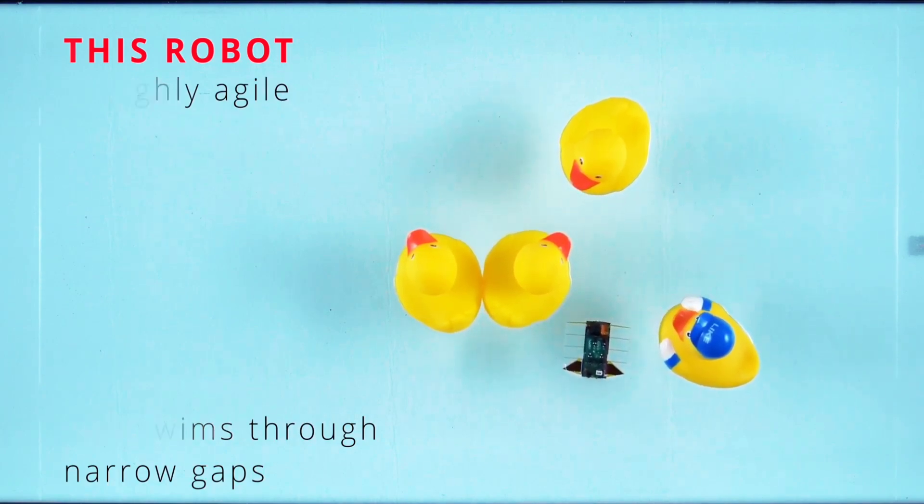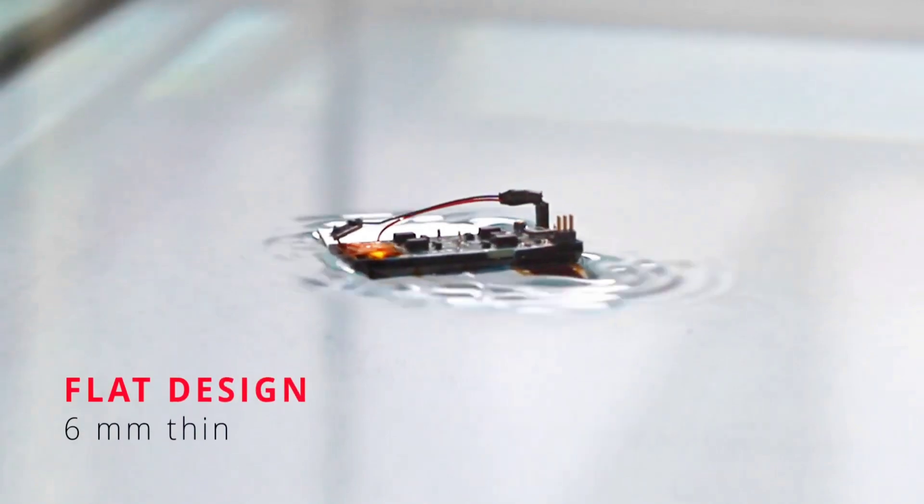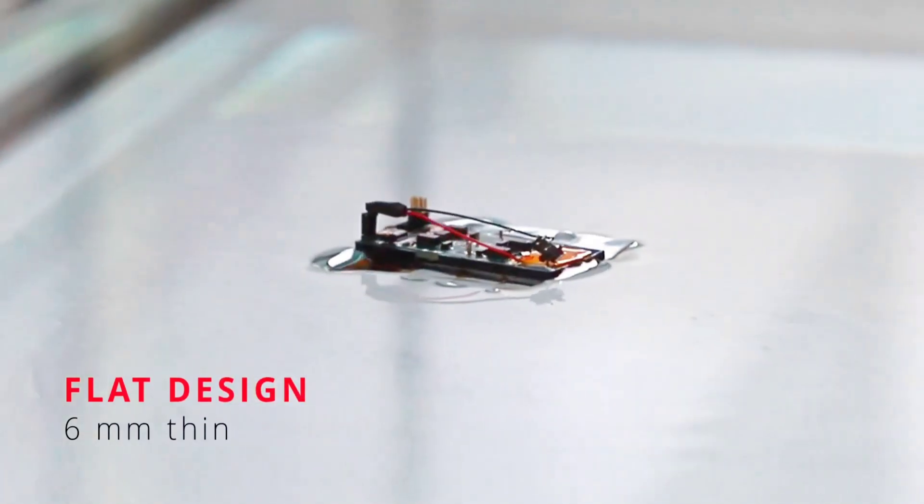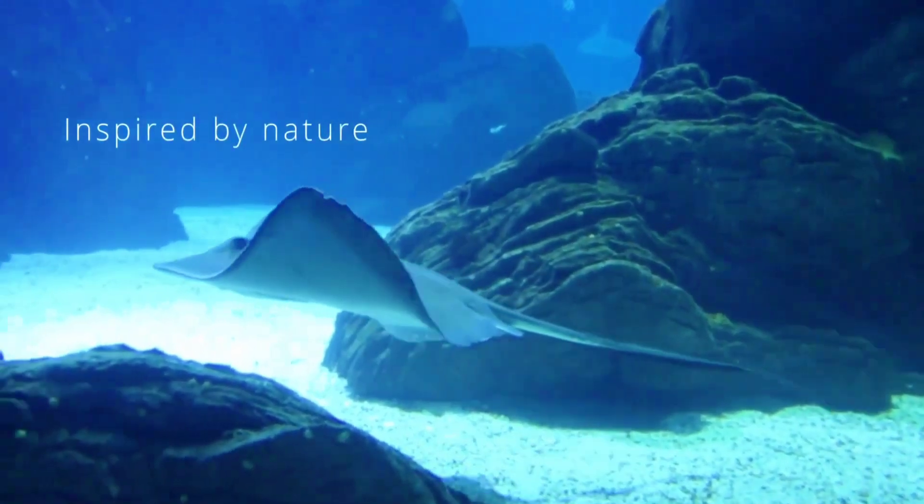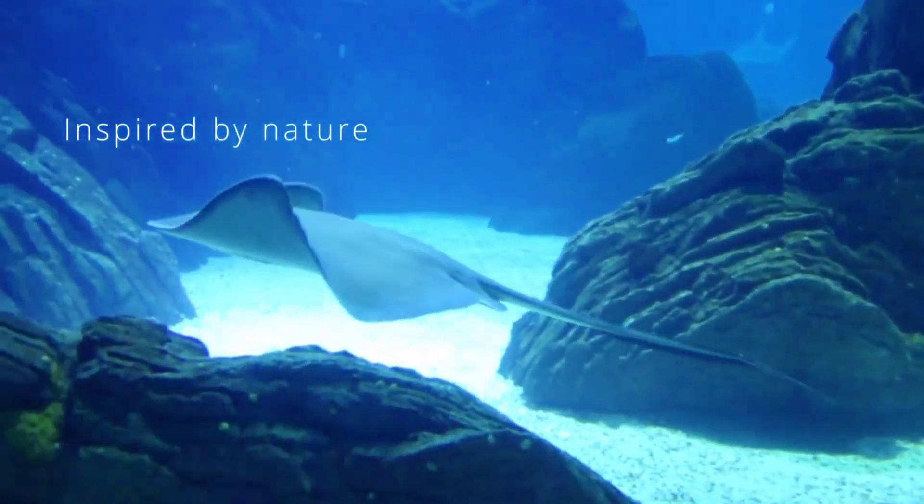Although marine flatworms generally stay on the seabed, they can swim through open water by undulating their thin, flat bodies. A series of traveling waves start at the front of the worm's body and roll to the back, propelling it forward.